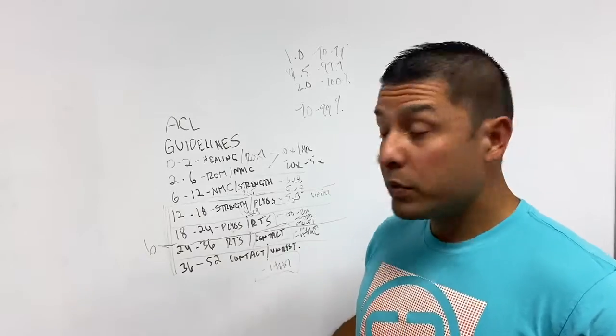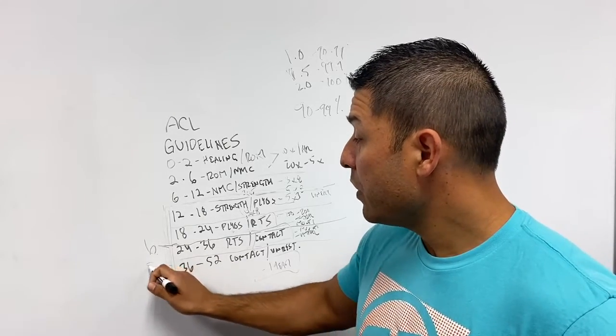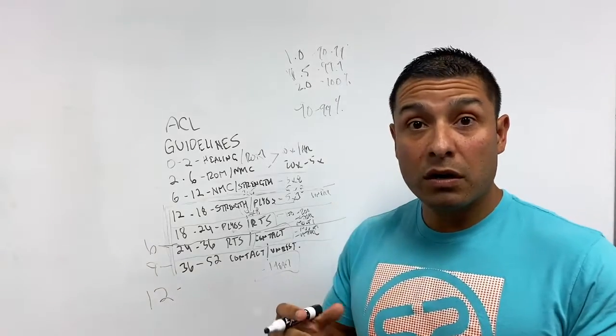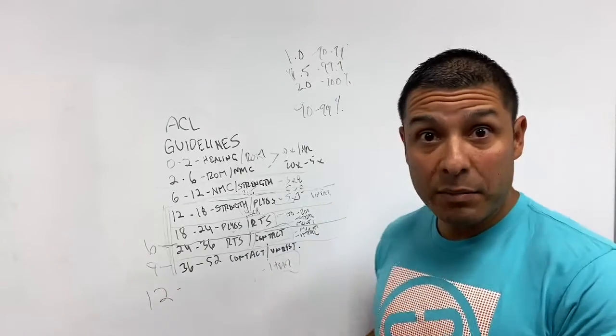And testing usually is at that six month mark, you're going to do return to sport testing, nine month mark, and the 12 month mark. At that time point, those are criterion based, and they're time based.